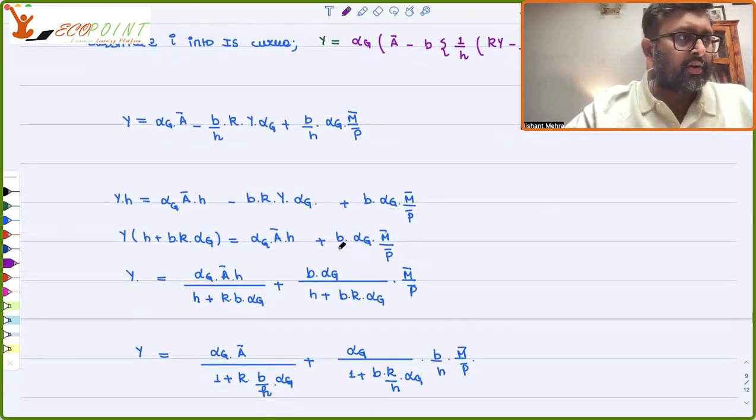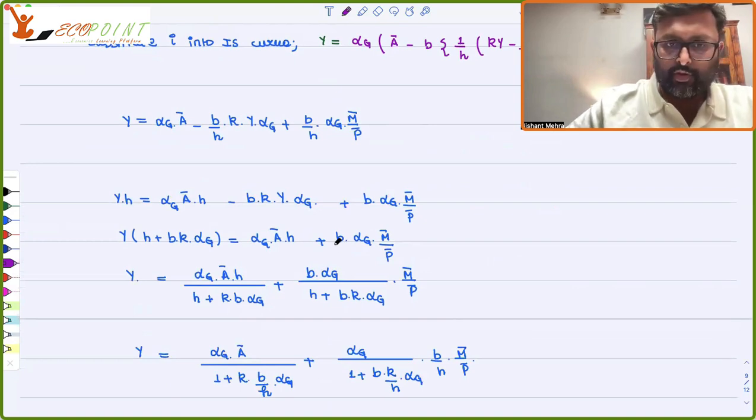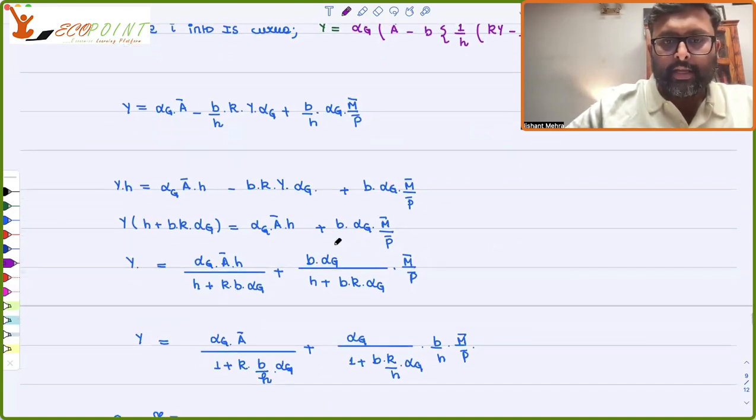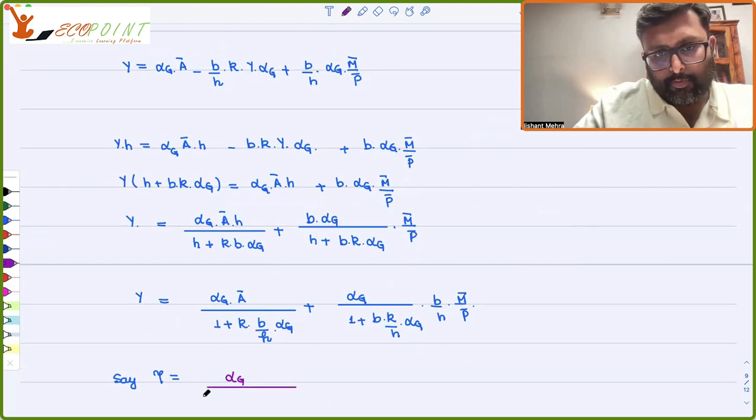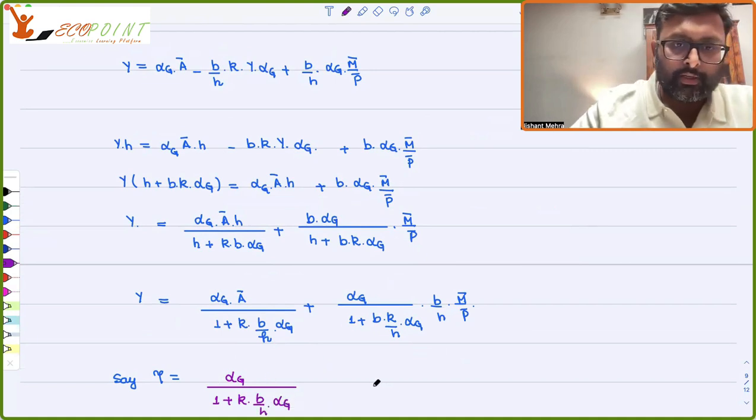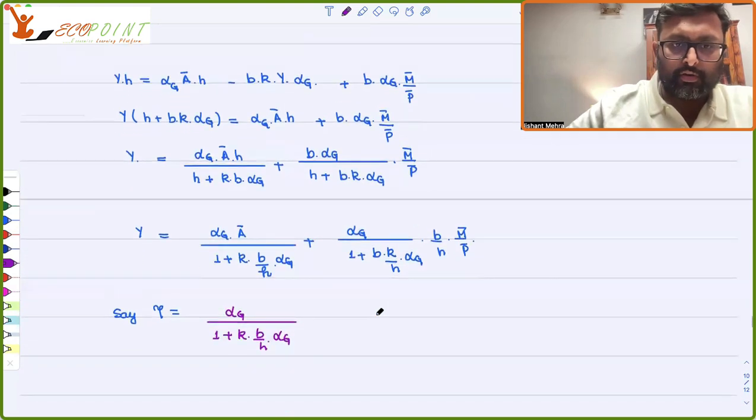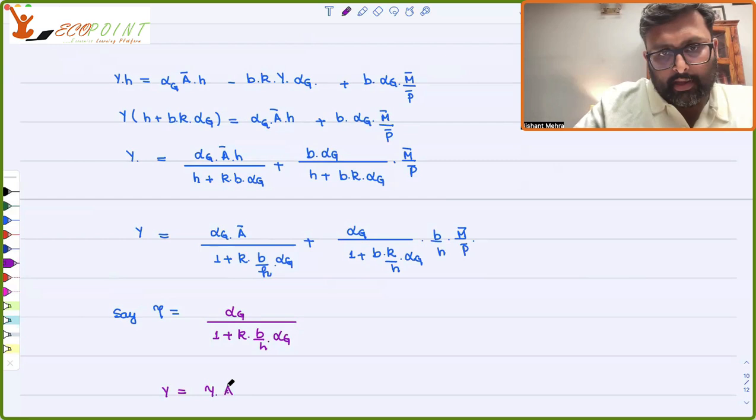So after some bit of algebra, I should be getting to this particular point. And I can write gamma as alpha G, and then I can write 1 plus K B into H alpha G. And then I can write this expression as Y equals gamma A bar plus gamma B by H M bar by P bar.